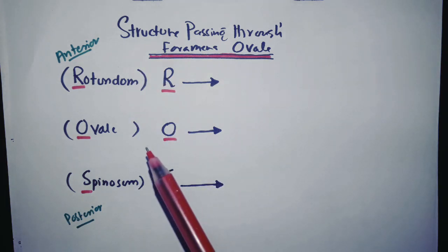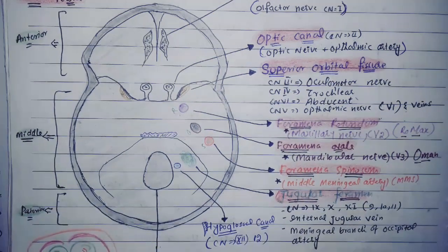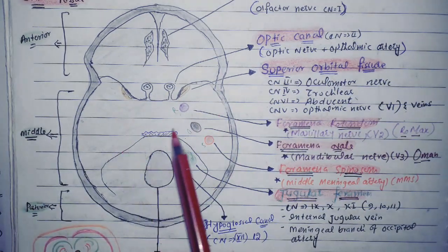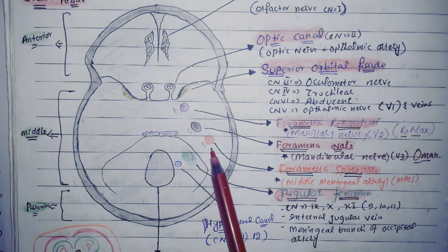So we have to know the relationship of these foramina with each other. As you guys can see here in this diagram, this is the middle cranial fossa and you can see here this one is the rotundum, this is the ovale, and this is the spinosum.